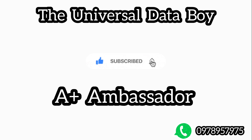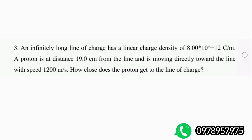Today we'll be going over an interesting question. It says: an infinitely long line of charge has a linear charge density of 8.00 times 10 to the power negative 12 coulombs per meter. A proton at a distance of 9.0 centimeters from the line is moving directly toward the line with speed 1200 meters per second. How close does this proton get to the line of charge?